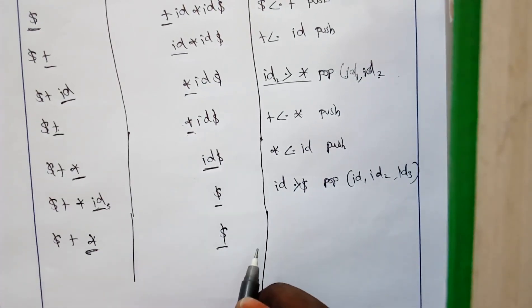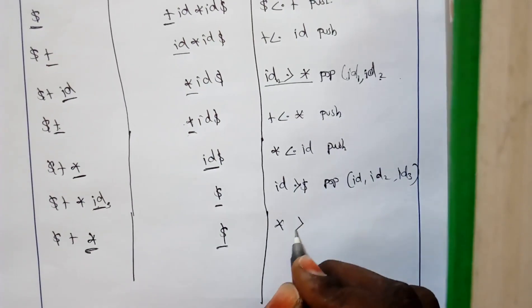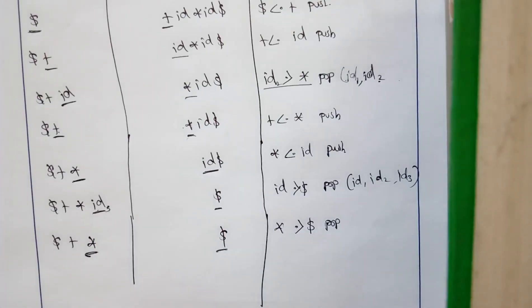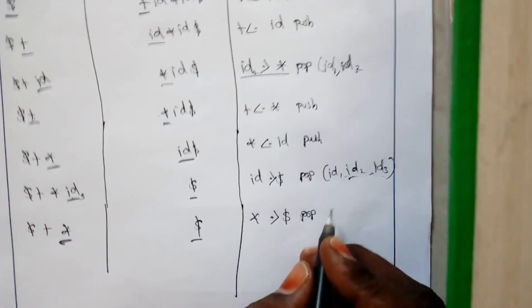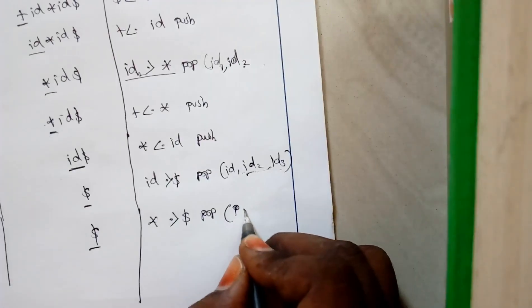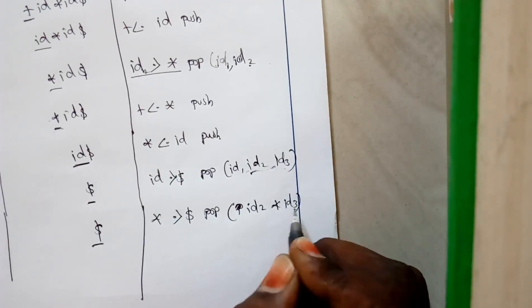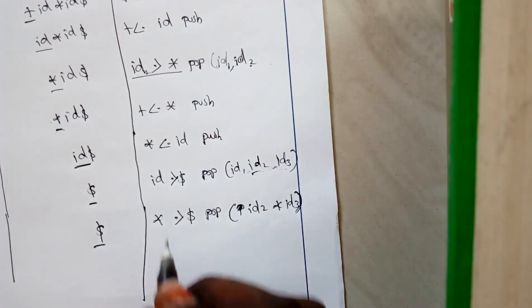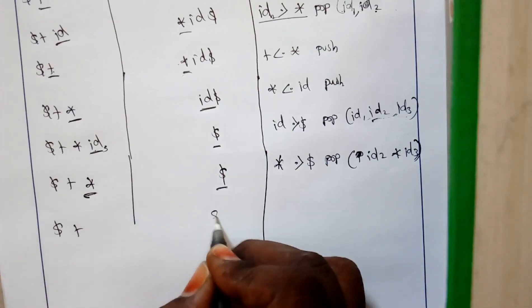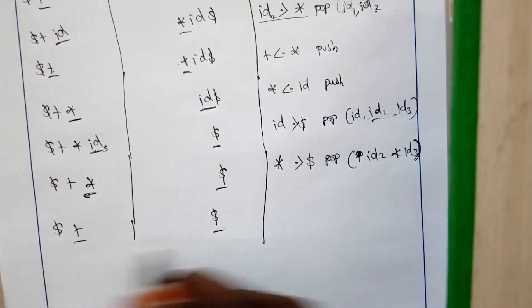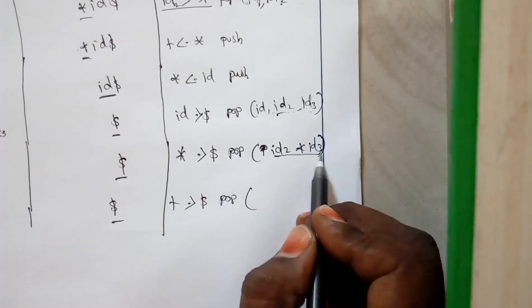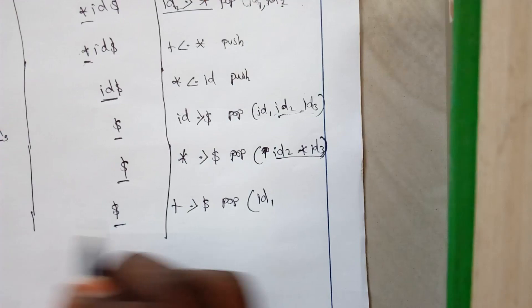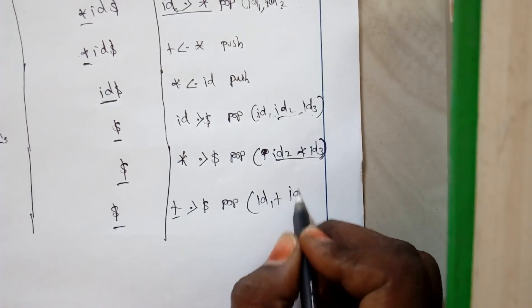Now we compare star and dollar. Star has a greater precedence over dollar, so we pop. Since star is an operator, we pop the last two operands inserted — id2 and id3 — and perform the operation id2 star id3. This is the arithmetic reduction. Finally we have dollar plus and dollar in the stack.